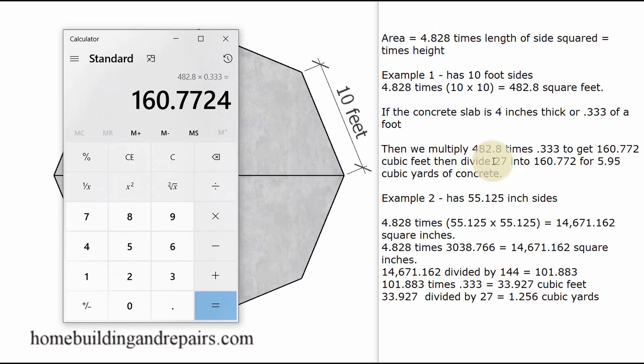However, if I was going to call out a concrete truck and I needed to know the cubic yardage, then I'm simply going to divide 27 into that number to get 5.954 or about 6 cubic yards of concrete.